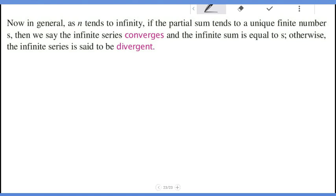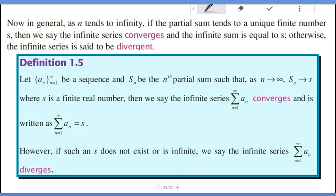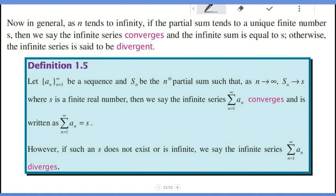As n tends to infinity, if the partial sum tends to a unique finite number s, then we say the infinite series converges and the infinite sum is equal to s. Otherwise, the infinite series is divergent. More precisely, let a_n from n=1 to infinity be a sequence and s_n be the nth partial sum. If s_n tends to s as n tends to infinity, where s is a finite real number, then the summation of a_n from 1 to infinity converges and equals s. However, if such an s doesn't exist or is infinite, we say the summation of a_n from 1 to infinity diverges.